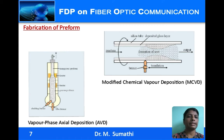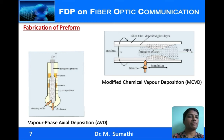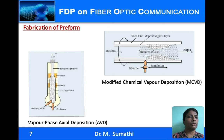In the modified chemical vapor deposition (MCVD) method, a pure silica tube rotates while the reactants — metal halides and oxygen — are pumped in. On reaction, they form oxides which deposit as soot on the inside of the rotating silica tube. This soot is sintered by an oxy-hydrogen flame that moves to and fro. When sufficient thickness of glass is formed, the entire setup is collapsed by heating to high temperature, forming a preform. The inner part with the dopant forms the core, and the pure silica tube forms the cladding.